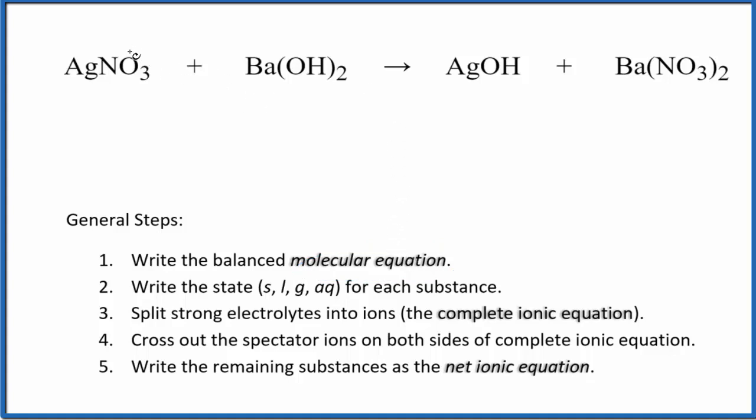I can see right here that I have one nitrate here and two nitrate ions over here. So I'm going to put a two in front of silver nitrate. That balances the nitrates. Two silver atoms, just one here. If I put a two here, silver atoms are balanced.